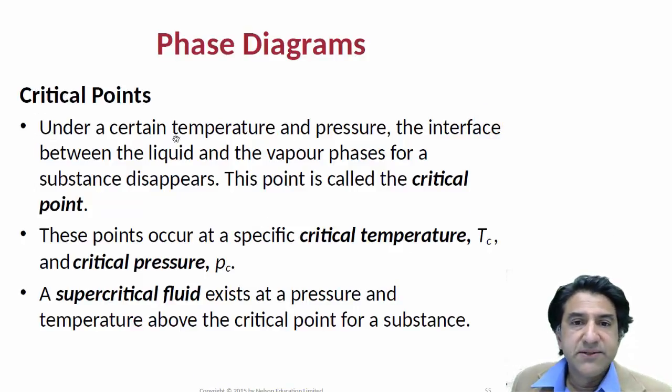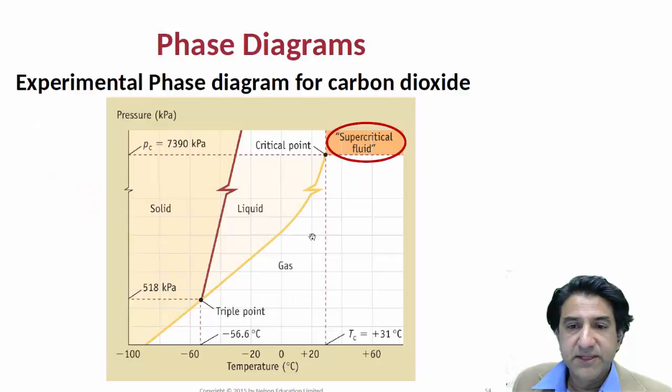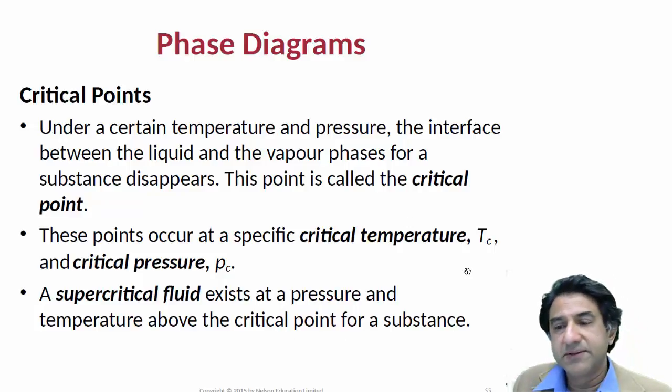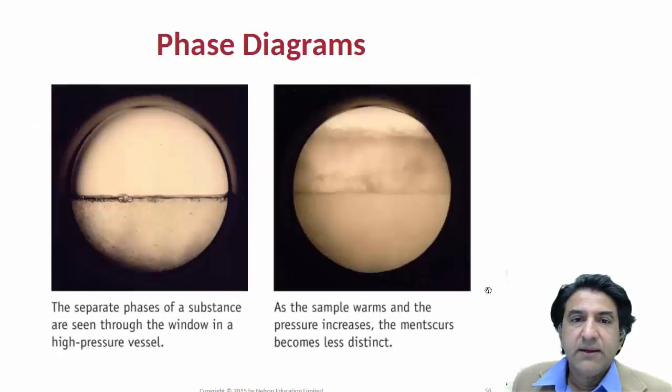Critical points. Under certain temperatures and pressure, the interface between a liquid and the vapour phase for a substance disappears, and this is called the critical point. These critical points occur at specific critical temperatures and critical pressures. That's this point just here, T critical and P critical. And this is another special point, the triple point, but that's not the critical point. A supercritical fluid exists at a pressure and temperature above the critical point for a substance, specifically above the critical pressure and above the critical temperature. Above those two quantities separately, you cannot have really a liquid or a gas. Technically, they're the same thing.